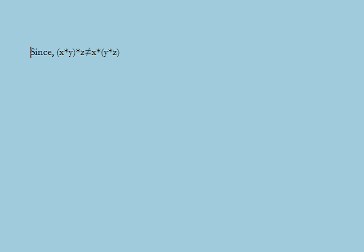Thus we can say that the given binary operator represented by asterisk is not associative. With this we conclude this lecture based on relations and functions, in which we dealt with binary operations and their properties.